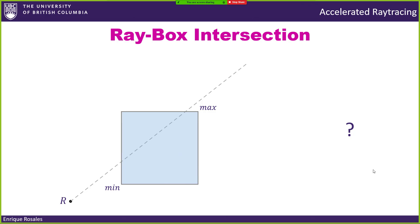Someone suggests reducing to ray-triangle intersection by triangulating the box — a box can be described with 12 triangles. That is a valid strategy, but it's still very expensive. Another suggestion: six ray-plane intersections, which is cheaper. In 2D it would be only four planes. We already have the equations for ray-plane intersection from a previous lecture. However, computing four or six plane intersections is still very expensive, so there's a better way.